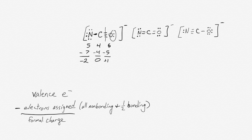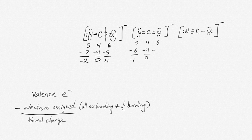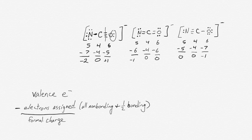If we do the same thing for the other examples, we can calculate their formal charges as well. Once we've calculated formal charges for each of these examples, we can decide which one is the most dominant structure. In each case, the formal charges all add up to give the overall charge on the molecular ion, which is minus one. Minus two plus zero plus one equals minus one; minus one plus zero plus zero also equals minus one; and zero plus zero plus minus one also gives minus one.